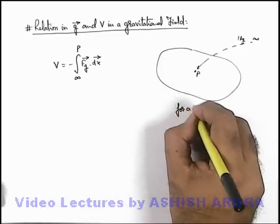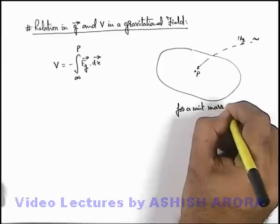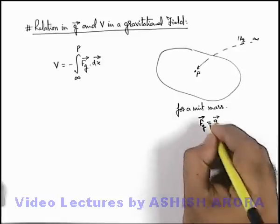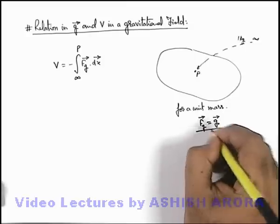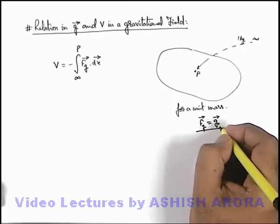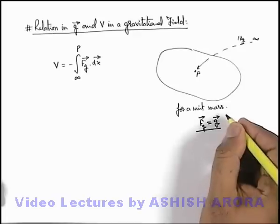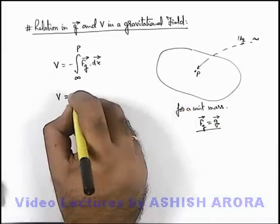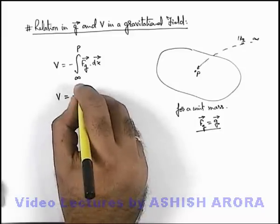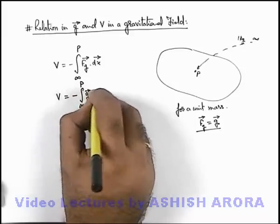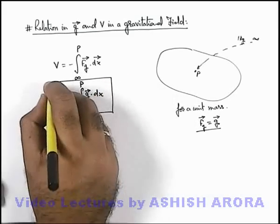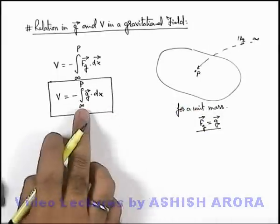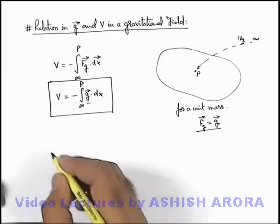For a unit mass, by the definition of gravitational field strength, force of gravity is equal to g vector. The magnitude of gravitational field strength at any point is the force experienced by a unit mass in the field at that point. So we can write the potential at a point as the negative of the integration from infinity to P of g dot dx. This is the way to calculate gravitational potential at a point if the expression of g vector is known in the surrounding region.